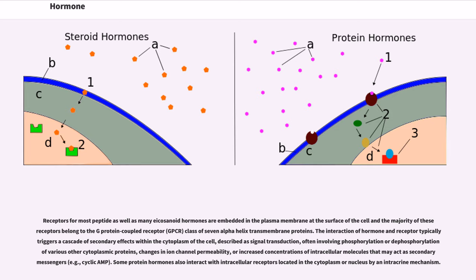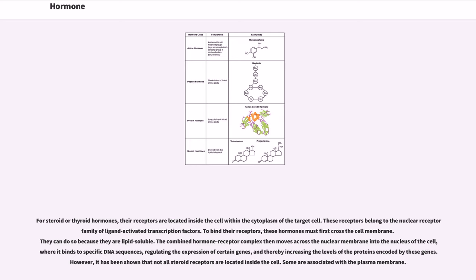Some protein hormones also interact with intracellular receptors located in the cytoplasm or nucleus by an intracrine mechanism. For steroid or thyroid hormones, their receptors are located inside the cell within the cytoplasm of the target cell. These receptors belong to the nuclear receptor family of ligand-activated transcription factors. To bind their receptors, these hormones must first cross the cell membrane. They can do so because they are lipid-soluble. The combined hormone receptor complex then moves across the nuclear membrane into the nucleus of the cell, where it binds to specific DNA sequences, regulating the expression of certain genes, and thereby increasing the levels of the proteins encoded by these genes.